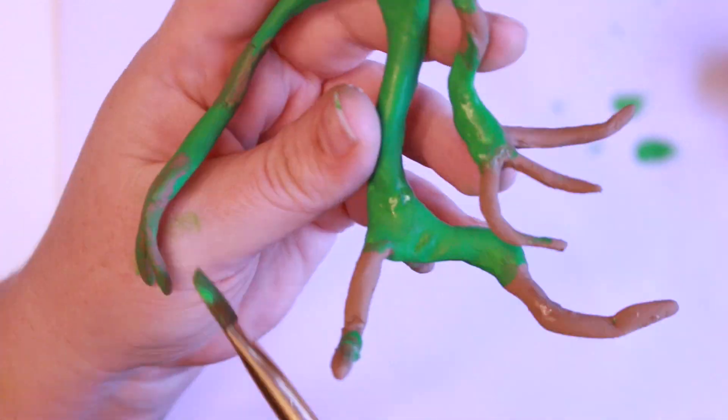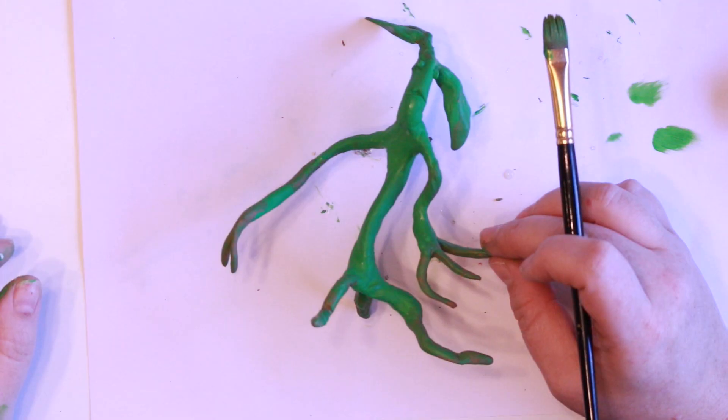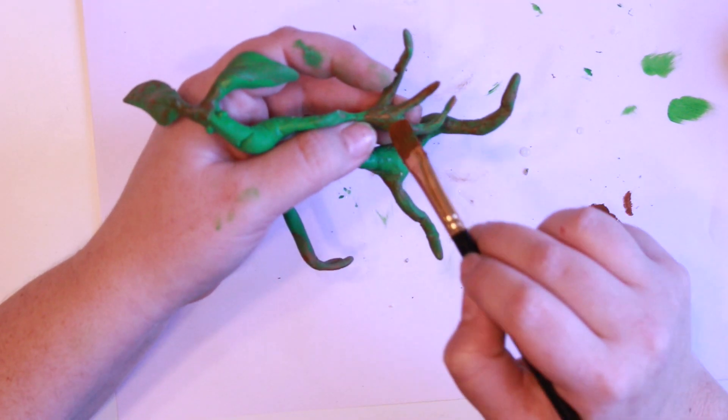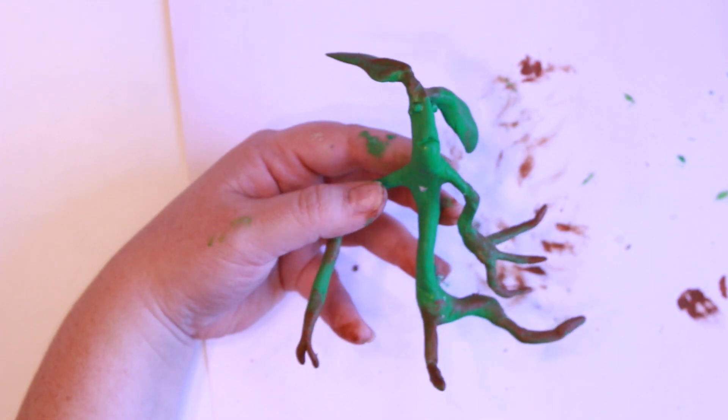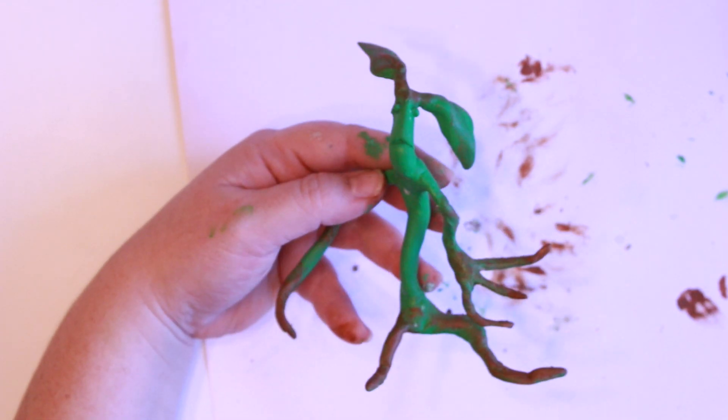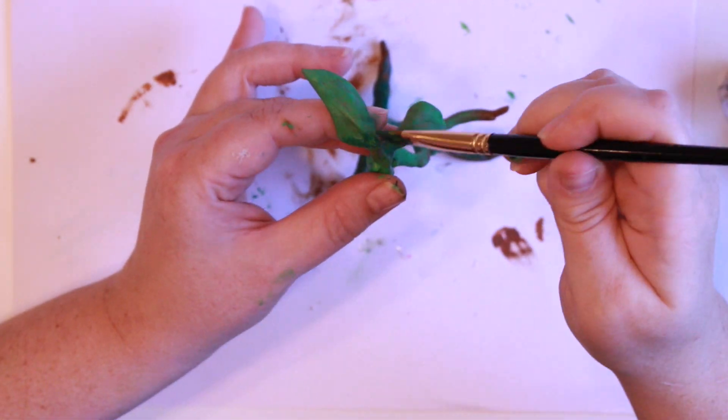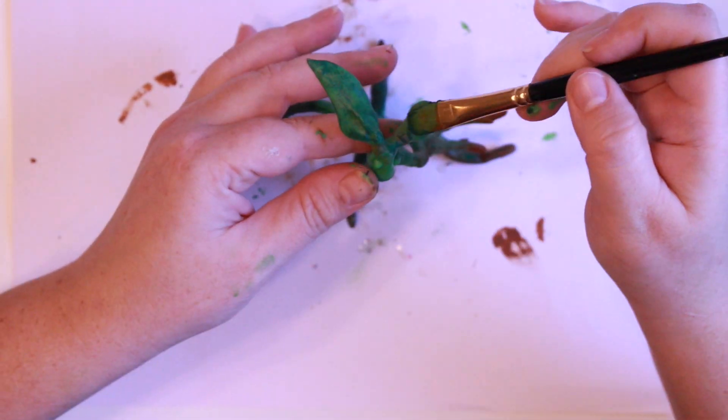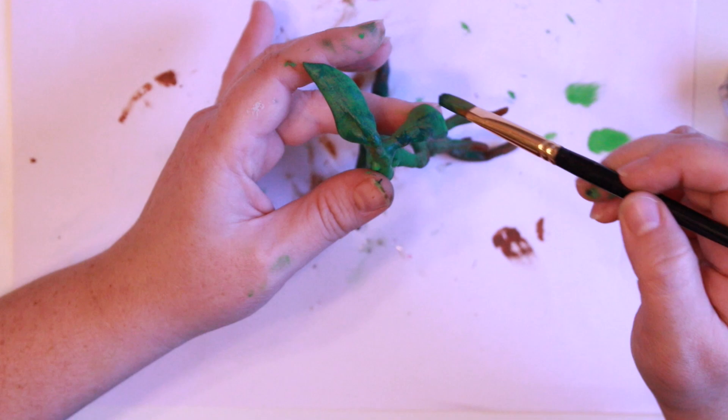If you didn't catch my Elder Wand video, definitely check it out and it will talk to you all about dry brushing. But basically I'm taking a little bit of paint, wiping off the excess, and then running it over my green so I get a layered brown and green effect, and you want to do this with a flat paint brush.